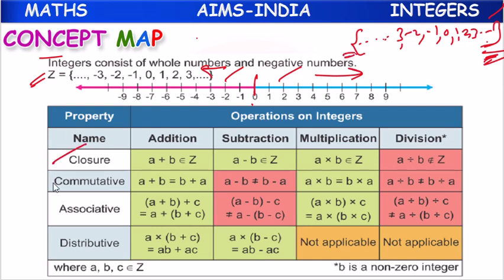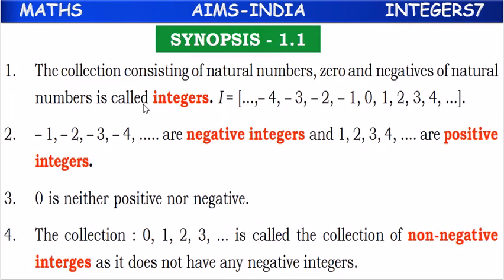About the closure property, commutative property, associative, and distributive properties — we have already learned all these in our previous videos.